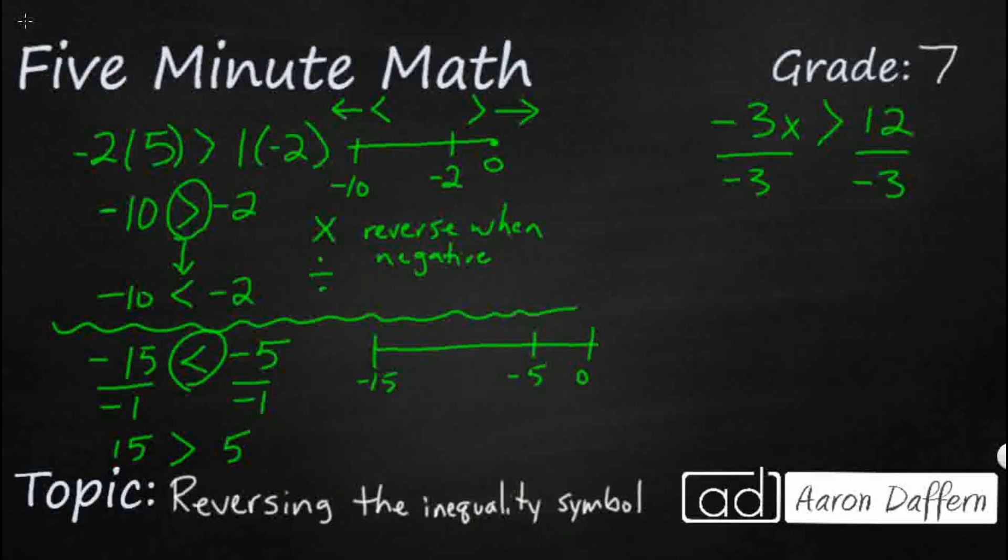So let's see what we have here. So negative 3x divided by negative 3 is going to be x. So 12 divided by negative 3 is going to be negative 4. But we need to go ahead and flip that inequality because we ended up dividing both sides by negative. And that would be our solution.